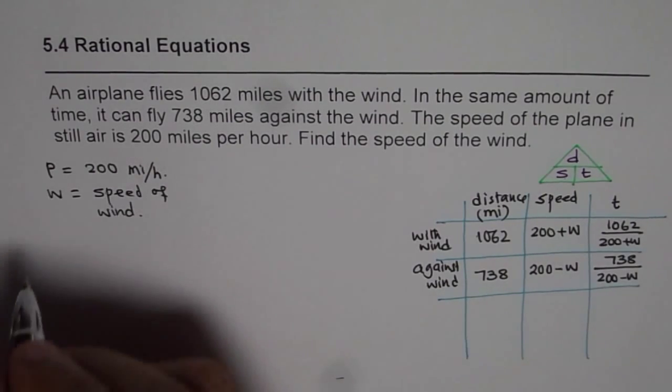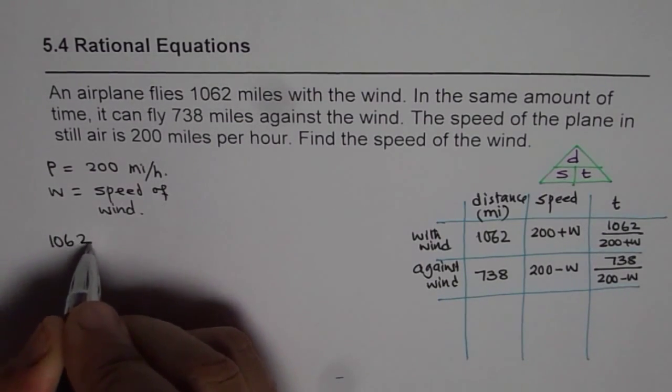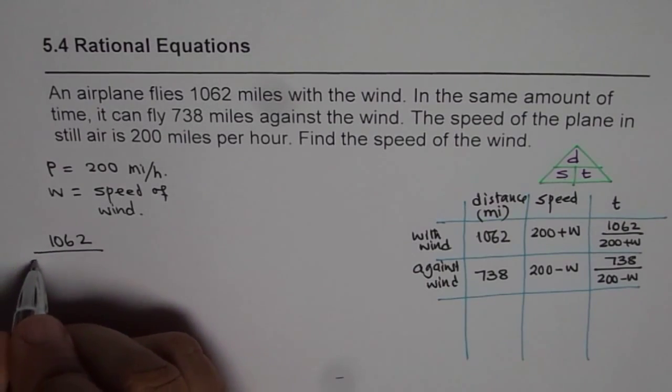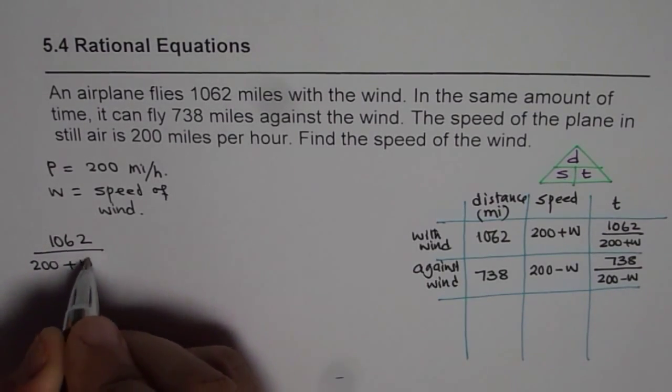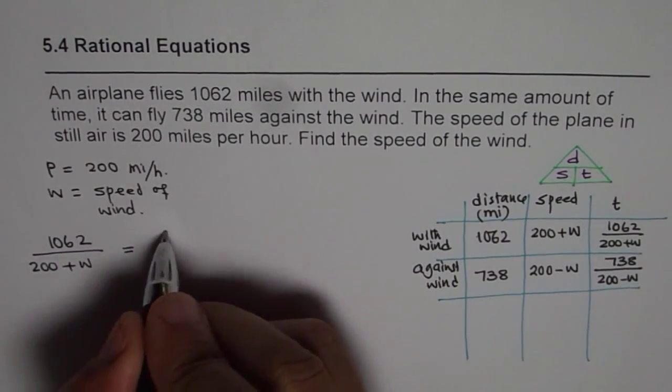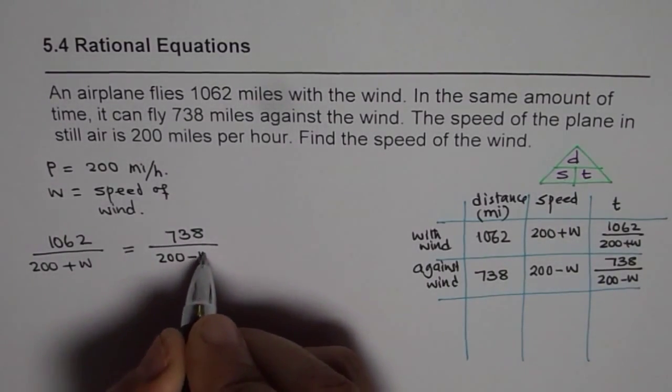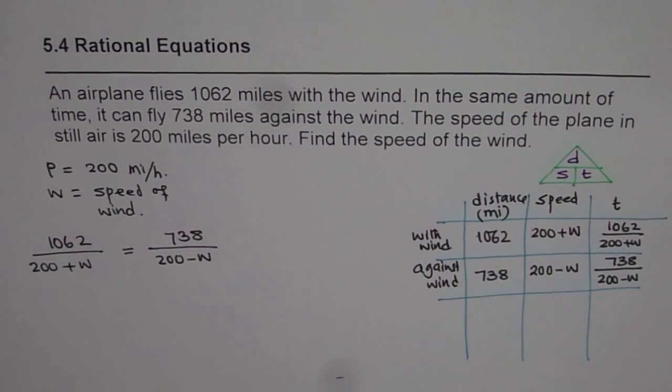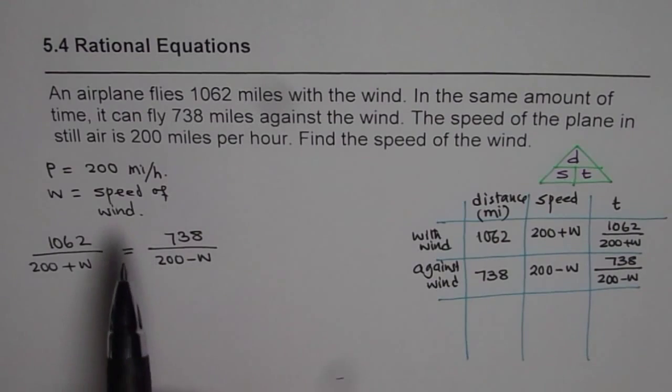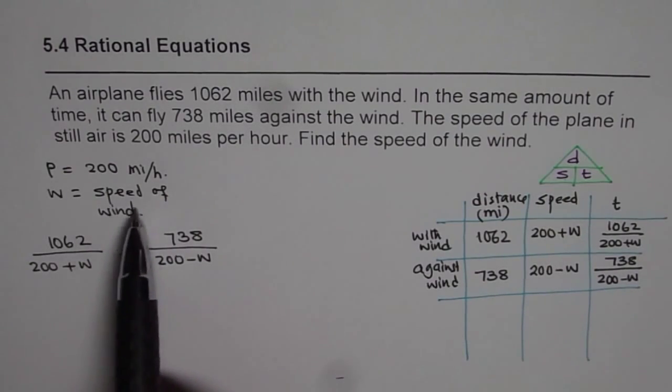So let us do it. So we have 1062 divided by 200 plus w equals to 738 divided by 200 minus w. I hope things are absolutely clear up to this stage. So what we have done here is: